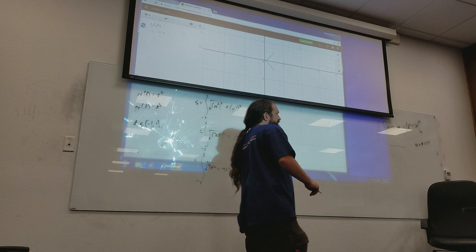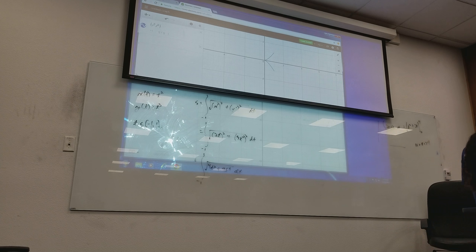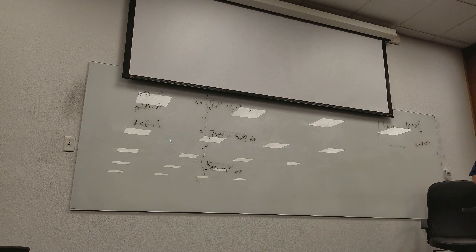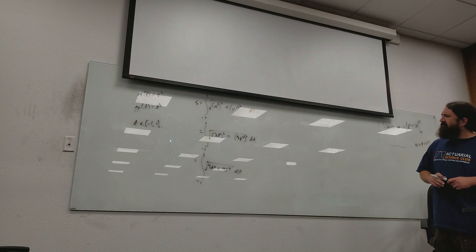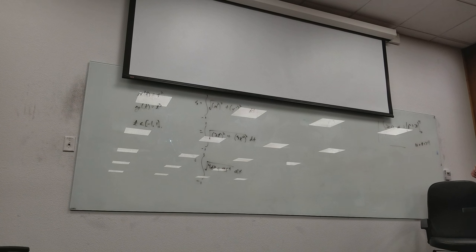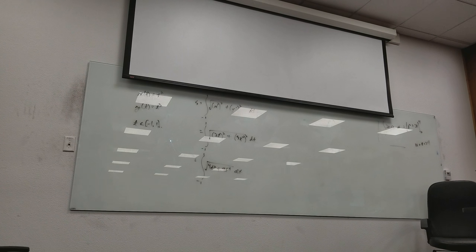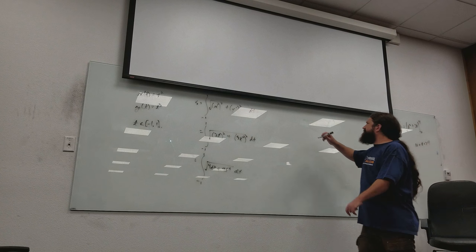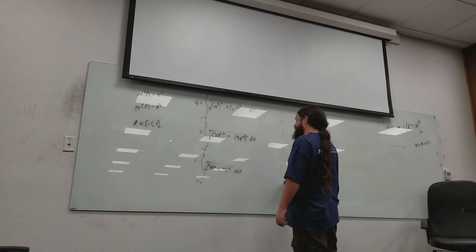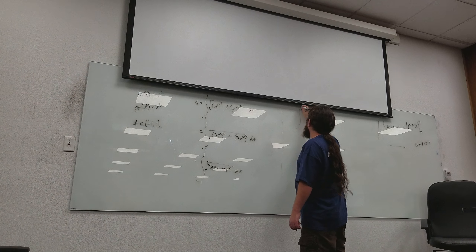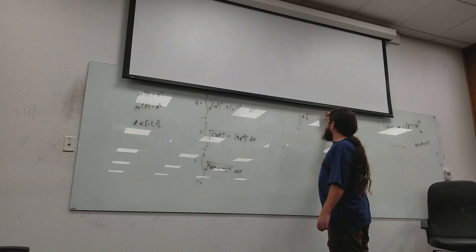Now the question is, how do I get through this one? Anybody see anything you can factor out that might help you? Yeah, you can factor out a t squared, so it looks like you can just take a t out of the outside. So let's try that. This is the integral from negative 1 to 1 of t times the square root of 4 plus 9t squared.